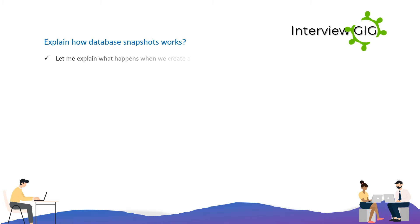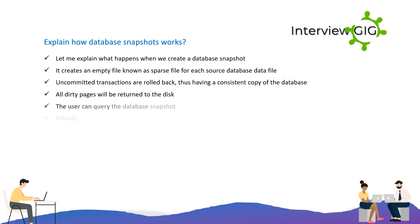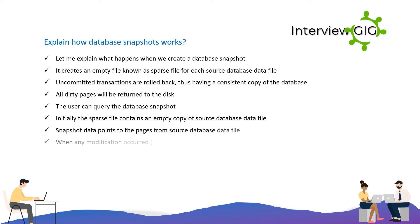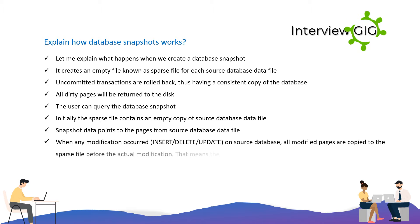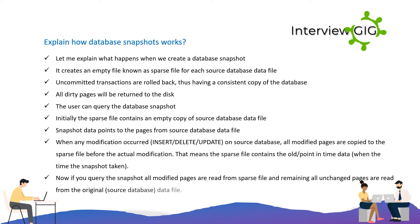When a database snapshot is created, it creates an empty file known as a sparse file for each source database data file. Uncommitted transactions are rolled back for a consistent copy of the database, and all dirty pages are returned to disk. Initially the sparse file is empty; snapshot data points to pages from the source database. When any modification — insert, delete, or update — occurs on the source database, all modified pages are copied to the sparse file before the actual modification, preserving the old point-in-time data.